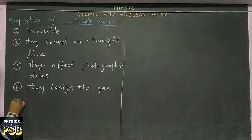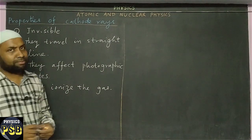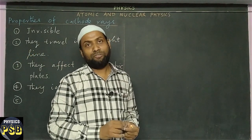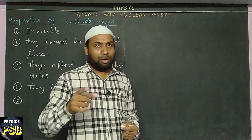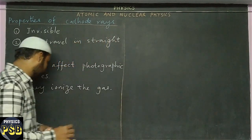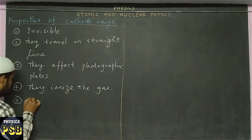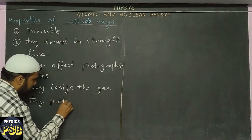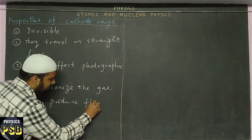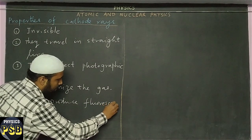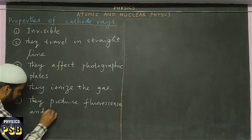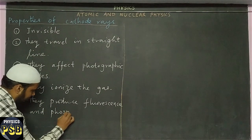Fifth: when cathode rays are made to fall on certain substances, they show fluorescence and phosphorescence.